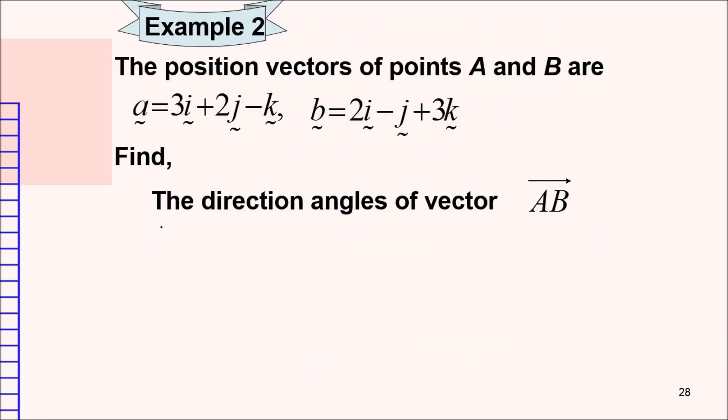Alright, so to find the direction angles of vector AB, first we need to check the value for AB, the vector AB. So, to find vector AB, what we need to do is, if you recall back, we need to have OB minus with vector OA.